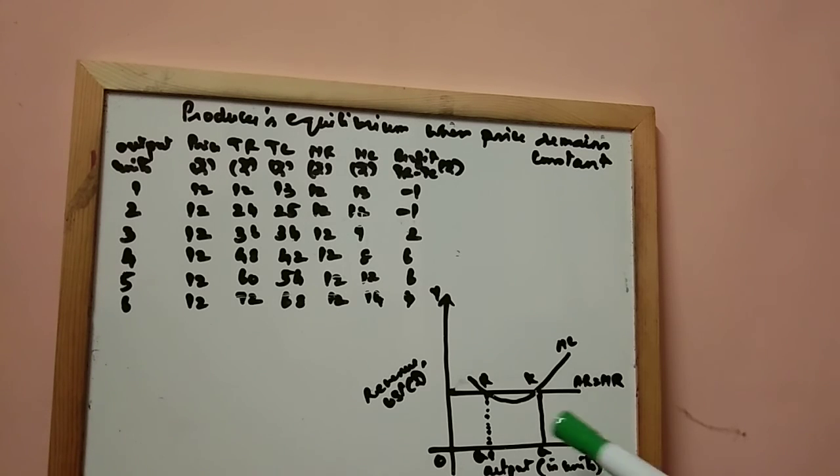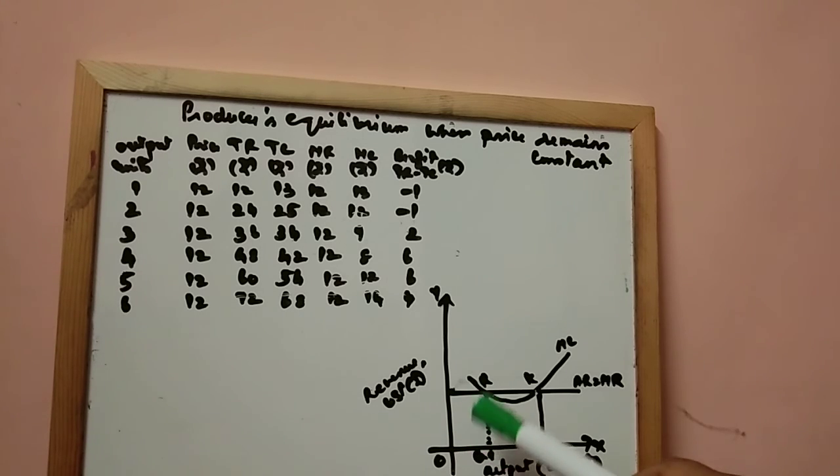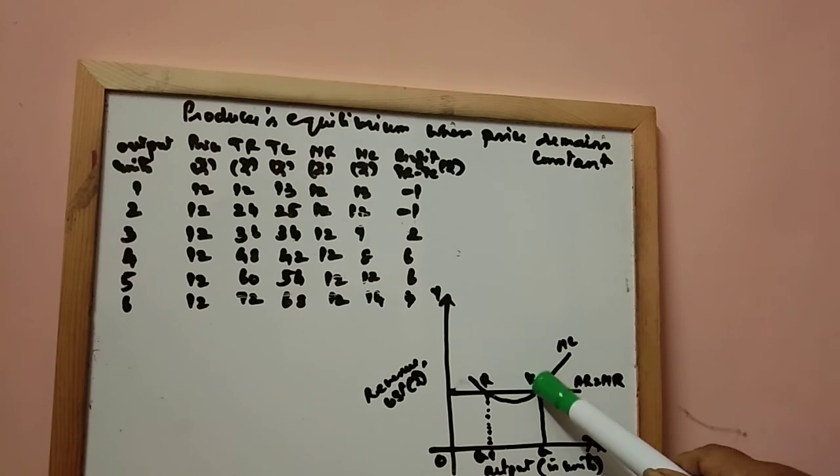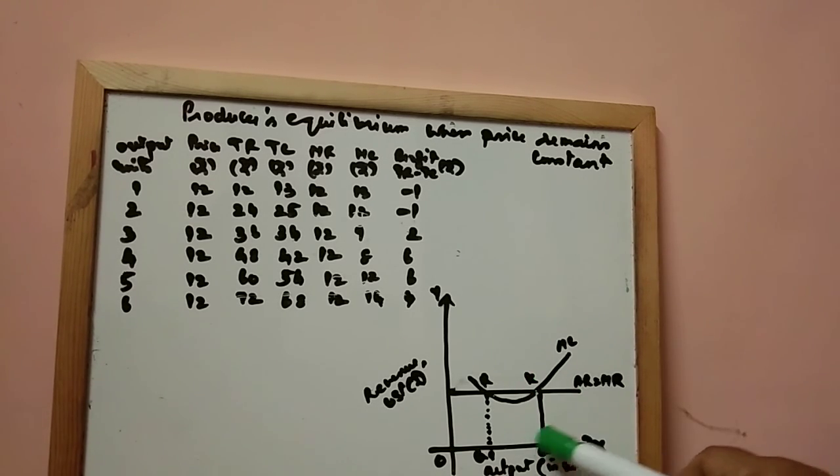So that is what this diagram says. This represents the second level of unit where he gets MR12 and MC12. Then he continues his operation to fifth unit of output. So there you get marginal cost and marginal revenue same. And if he continues after this, the marginal cost becomes more than marginal revenue. So you will not get more profit. Profit will decline from this.